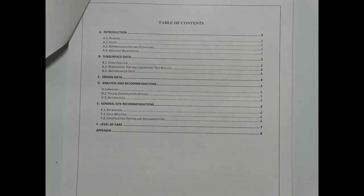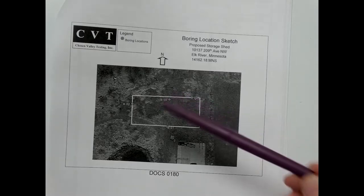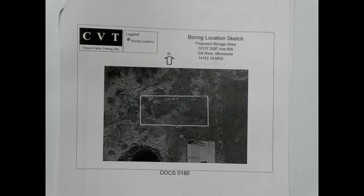We're going to work on the appendix first. The documents in the appendix include the location sketch, a log of the four borings that were taken, and information describing the soil. This is a satellite photograph — probably from Google Earth — showing the footprint of the proposed building. That white box is the proposed storage shed location. There are four borehole locations: borehole number one, two, three, and four. Those four boreholes are advanced, and as they drill down through the soil we take samples to evaluate what material is present.